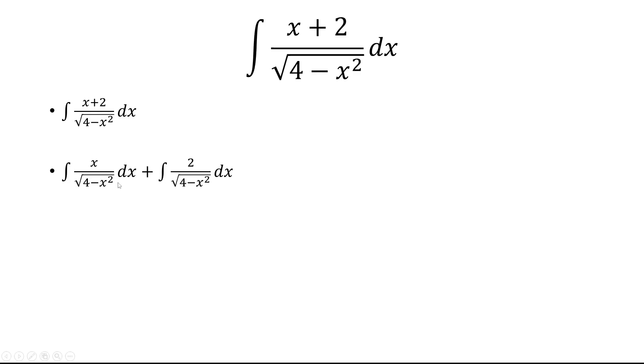We're going to use u substitution. Let u equal 4 minus x squared. So du is negative 2x dx, but in our integral we have x dx, so we have to divide both sides by negative 2 to get negative 1 half du.